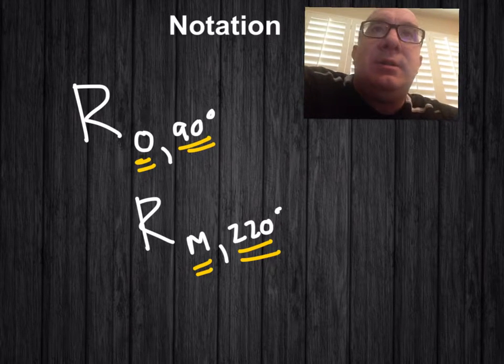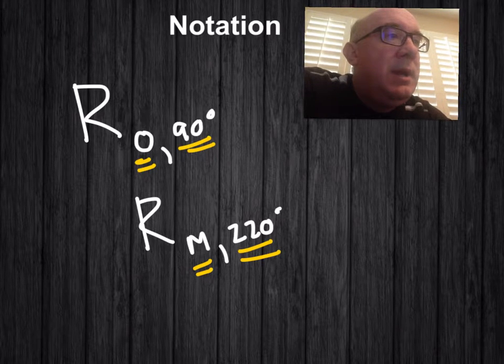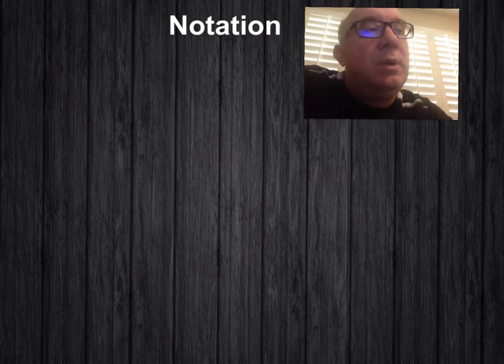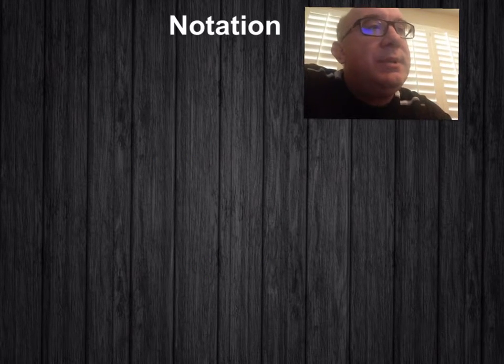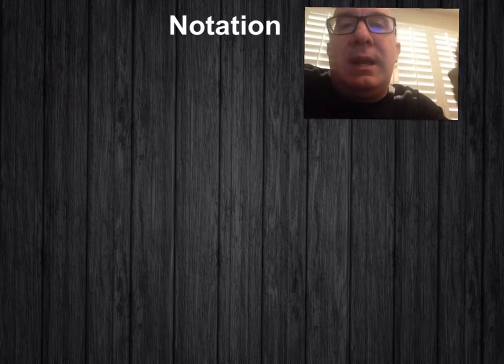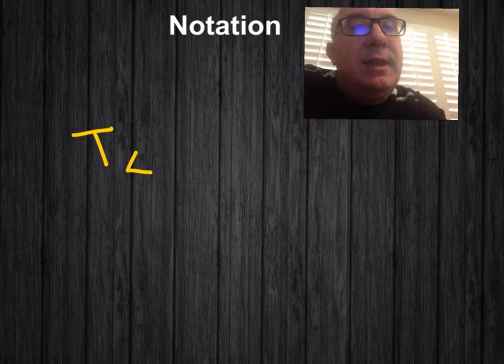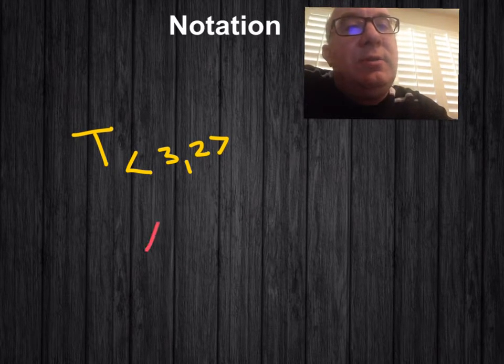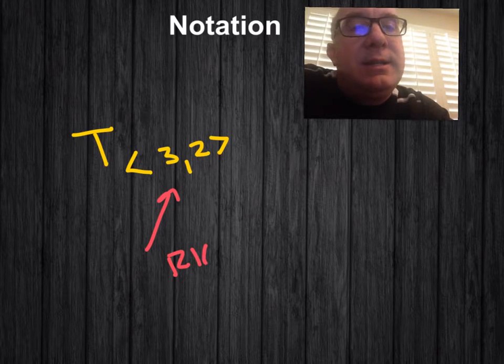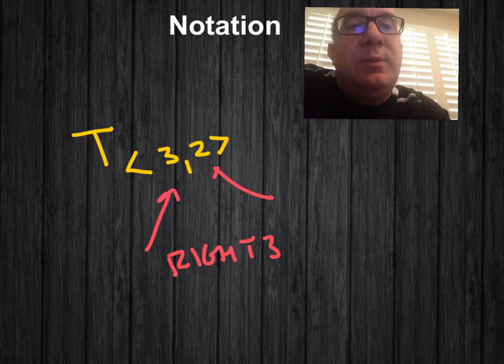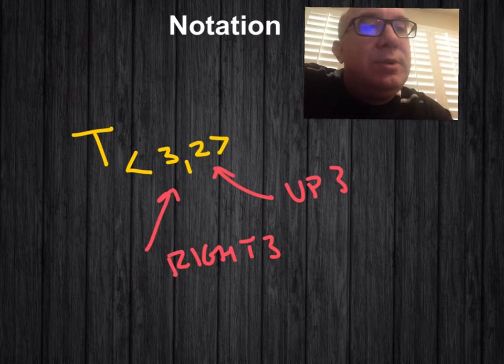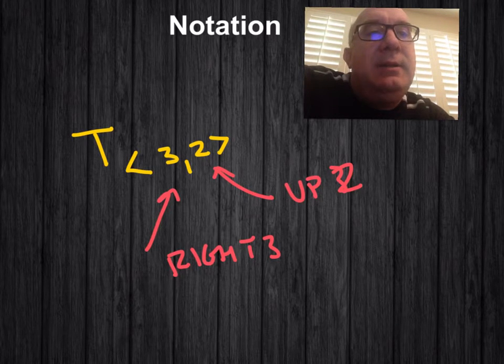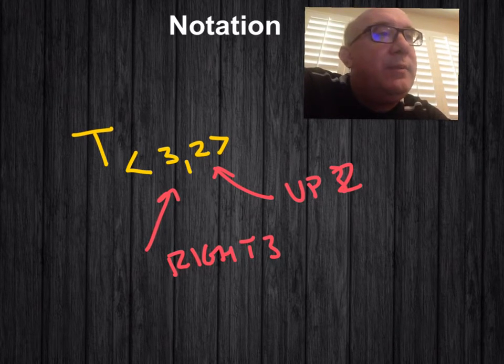The last one I'll just look at is translation. Let me clear this off. The way a translation works is it just describes the vector. So it would be like this, translation, and then there'd be vector notation, 3, 2. This would refer to 3 to the right because it's the x value, and this would refer to up 2 because it's the y value. And so it's a directional vector is what's being provided there.